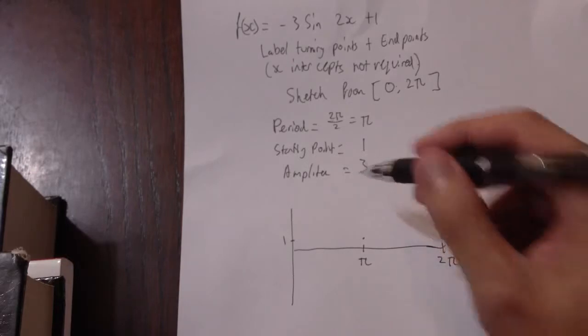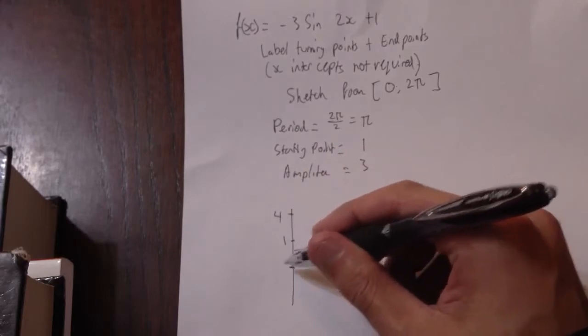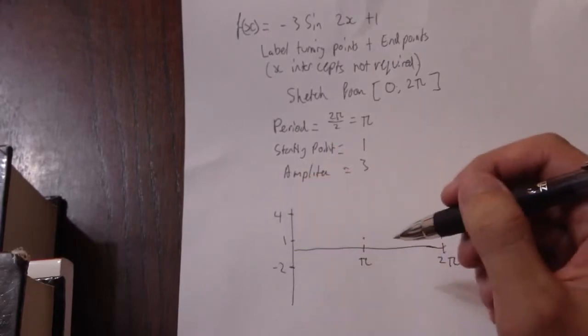We know the amplitude is 3. So the max height will be 4, and the minimum will be minus 2, because 1 plus 3 and 1 minus 3.